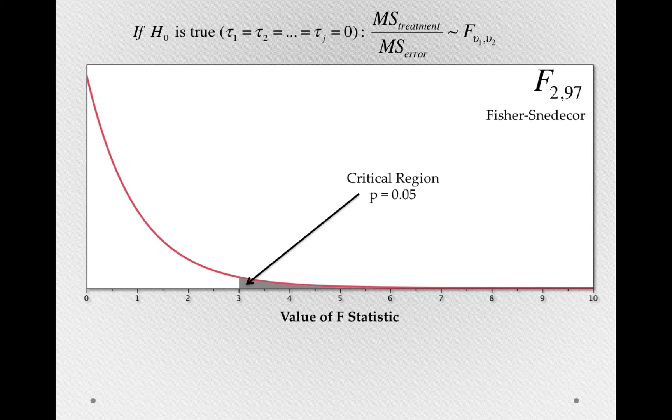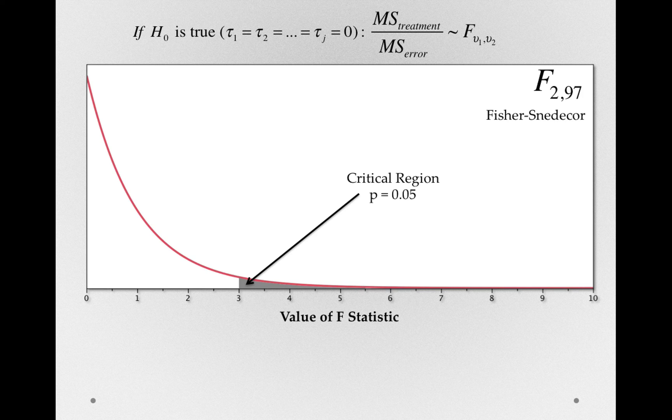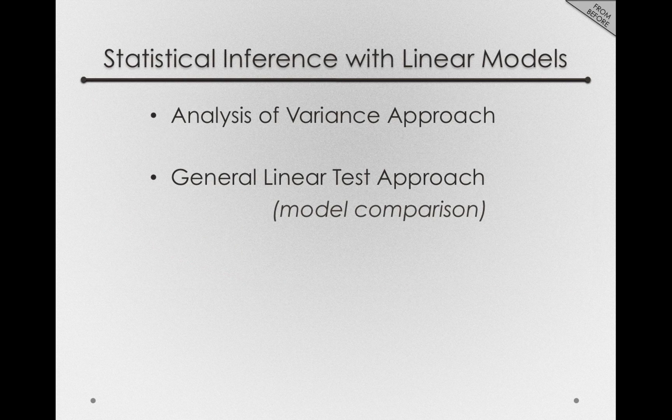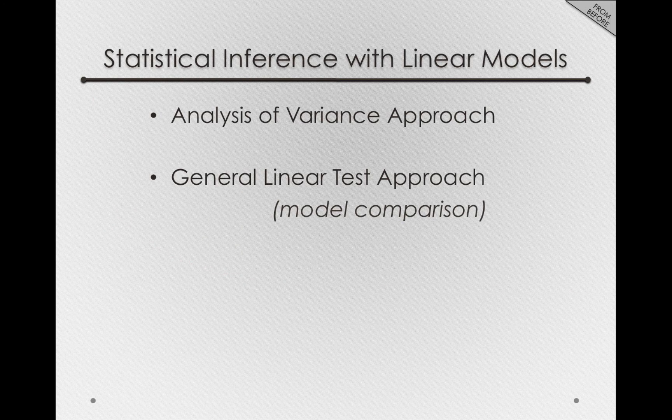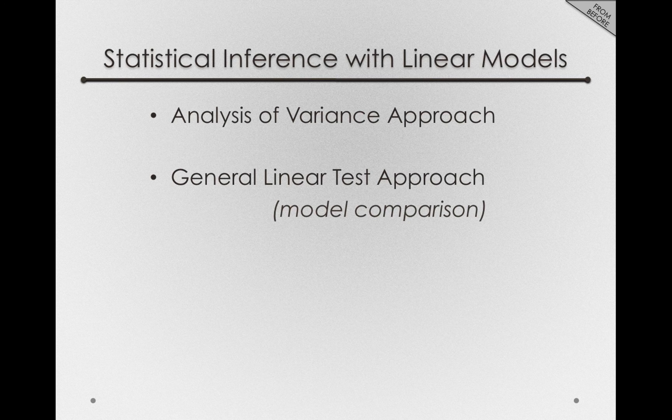And rejecting a null hypothesis in this case is akin to saying we believe whatever groupings we've formed in our sample actually exist in the population. That in the population, the factor under consideration is truly used in forming individual scores. So, either way we come to our inference, either the analysis of variance or general linear test approach, we'll be able to test hypotheses now about entire factors, and this will considerably increase the number of applications for our statistical theory.